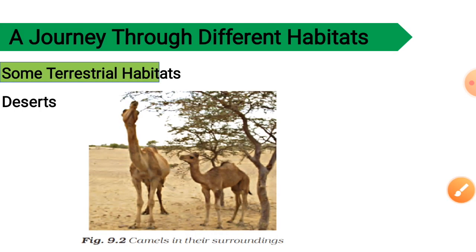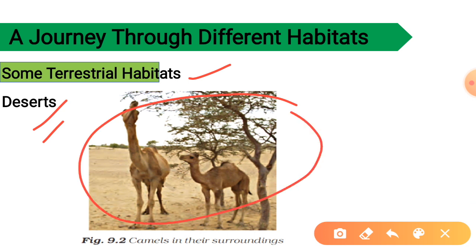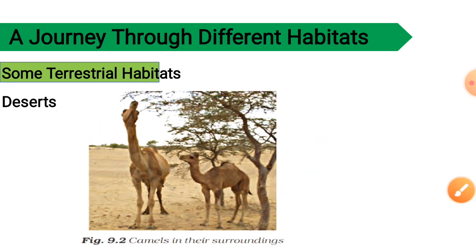Now for our next topic, we will have a journey through different types of habitats. We are starting with some terrestrial habitats, and the first one is desert. We will see what are the various adaptations of the camel, a very common animal found in the desert, known as the ship of the desert. First of all, the body structure of the camel helps it to survive in desert conditions.